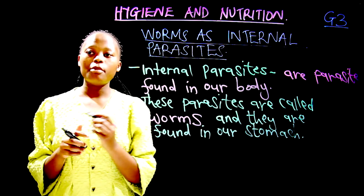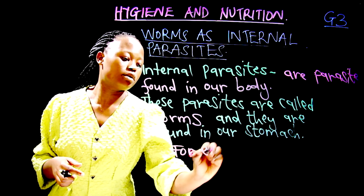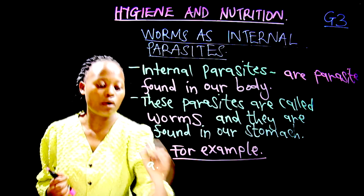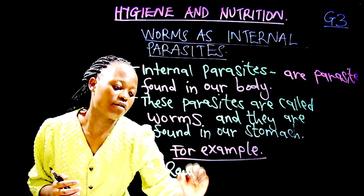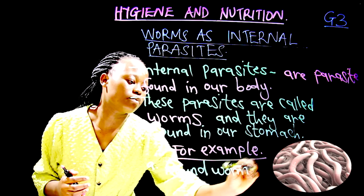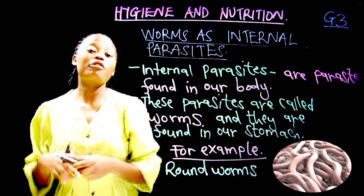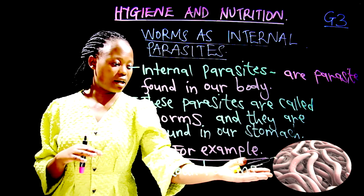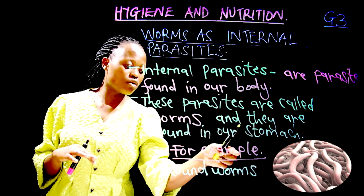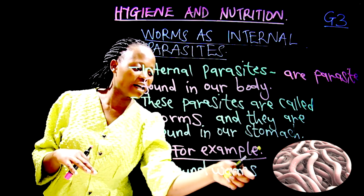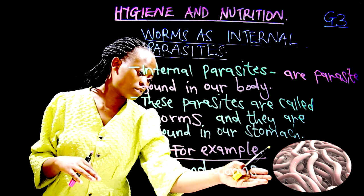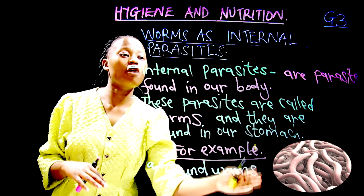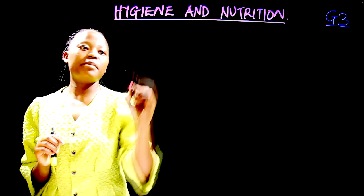Now let's look at examples of internal parasites. First, we have roundworms — an example of an internal parasite. You can see a picture of a roundworm here. When they are inside your stomach they coil themselves until they are round. They are not good friends because they depend on your blood and your food.